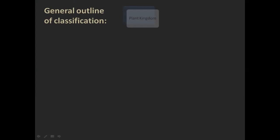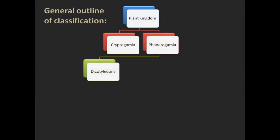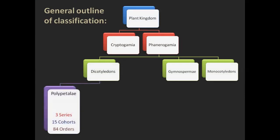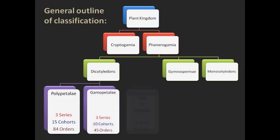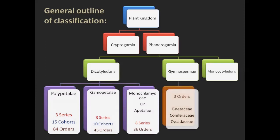Let us see the general outline of classification. Bentham and Hooker divided the plant kingdom into Cryptogamia and Phanerogamia. Division Phanerogamia is divided into class Dicotyledons, class Gymnospermi, and class Monocotyledons. Dicotyledons were further divided into three subclasses: Polypetali, Gamopetali, and Monochlamidae or Apetali. The Gymnosperms were directly divided into three orders: order Netici, order Coniferasi, and order Cycadeasi.